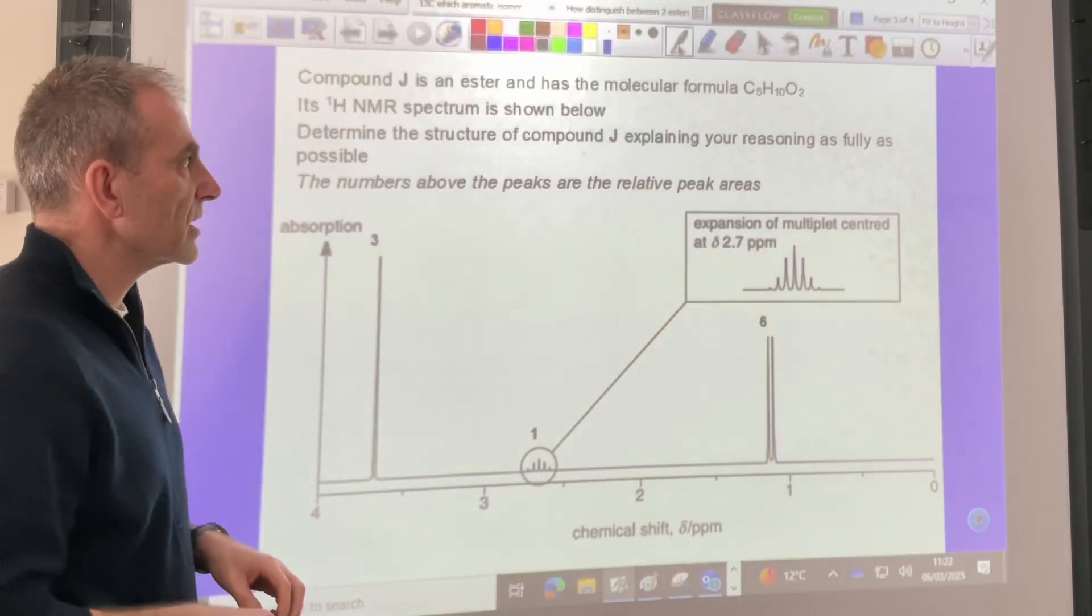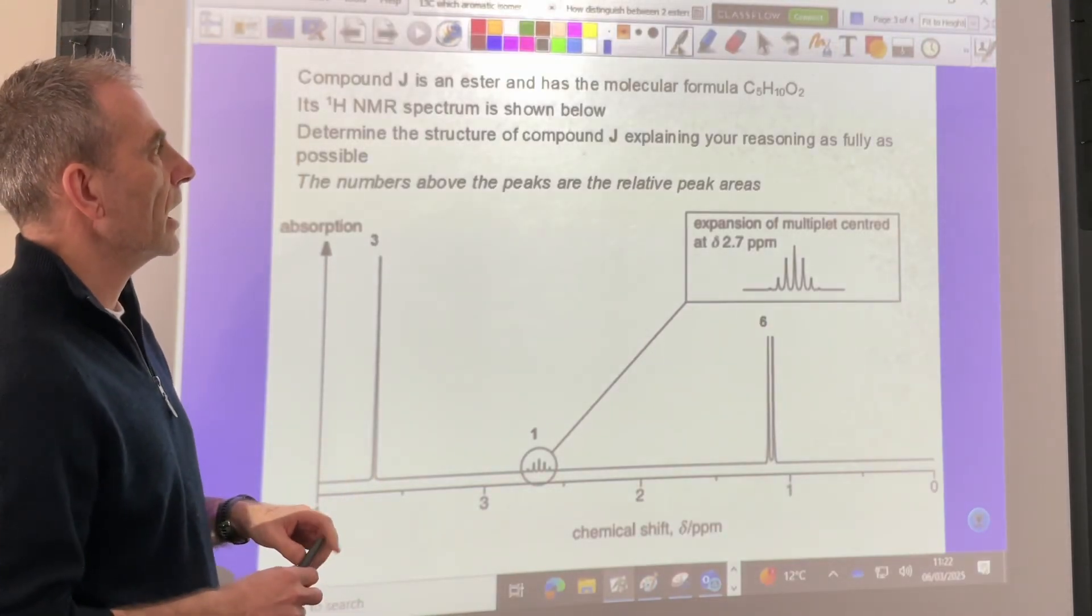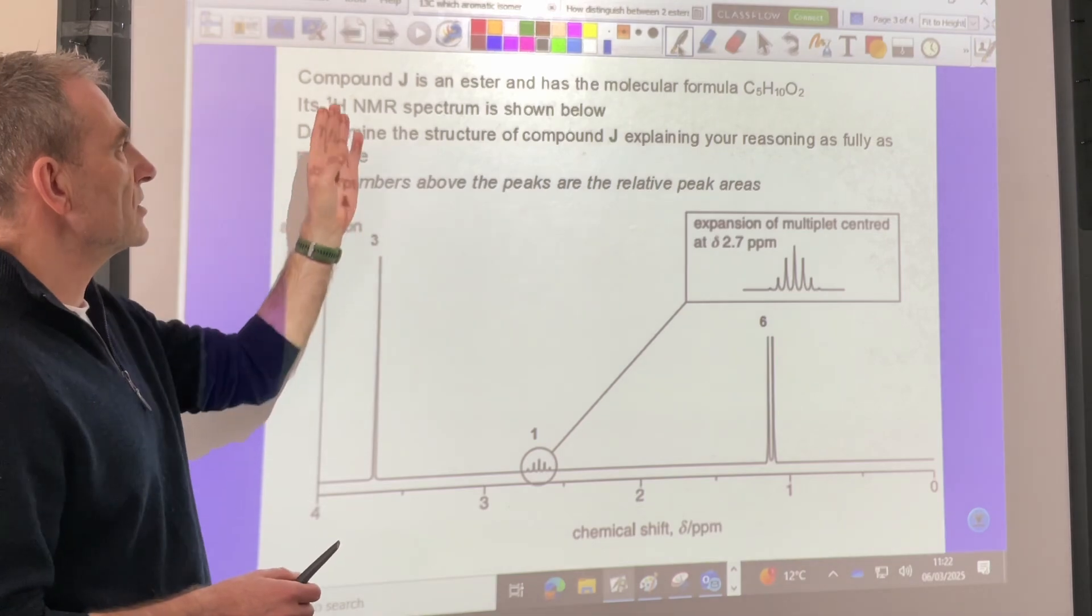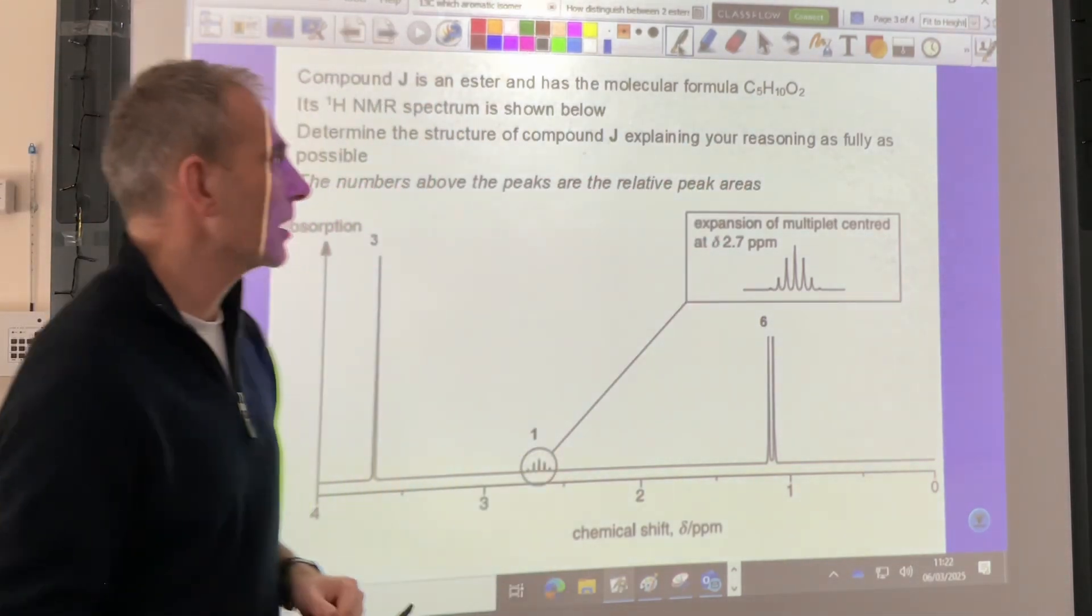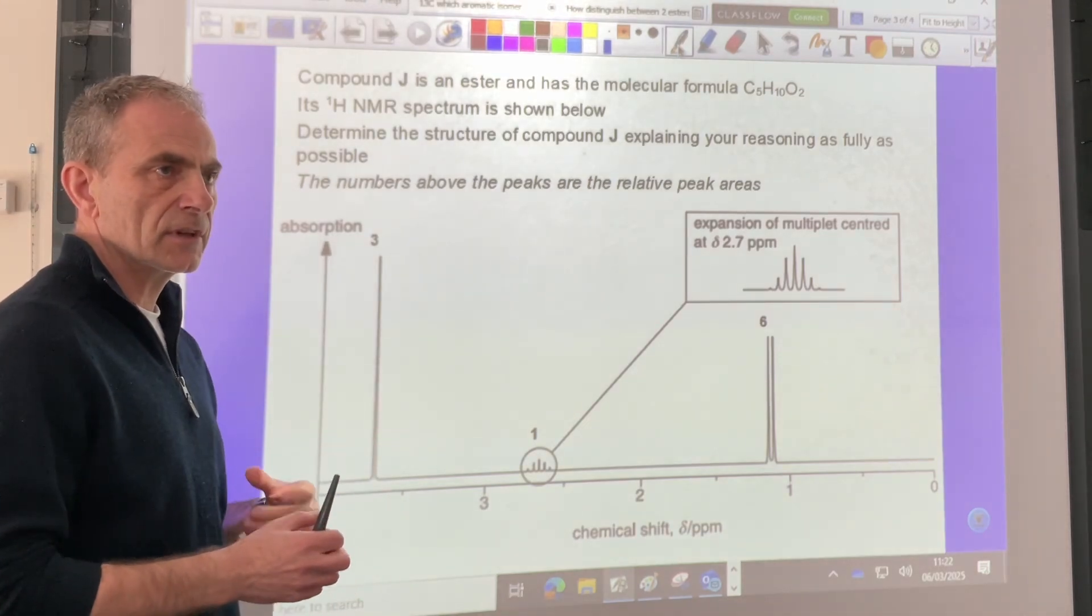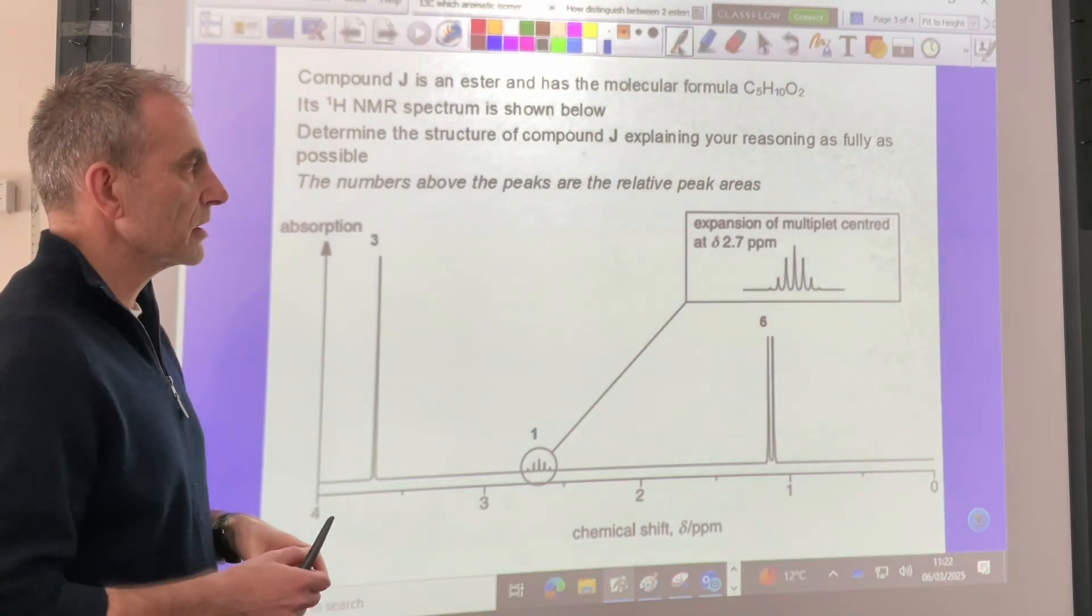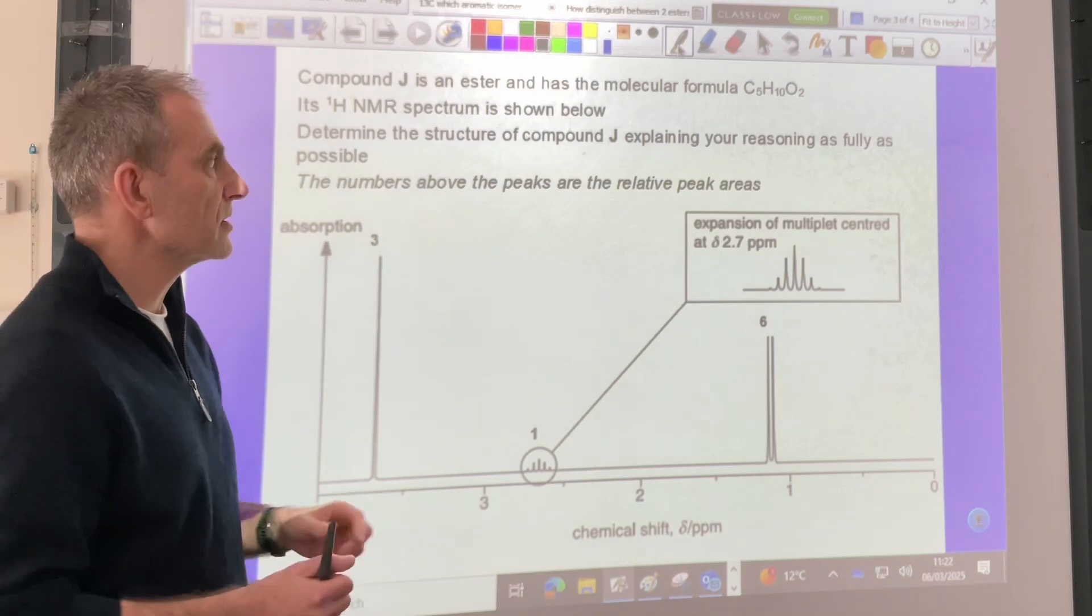We've got a typical past paper question here on proton NMR, so we've got to determine the structure of ester J. There's its molecular formula, but what I wanted to do was just give you some clues, some tips and tricks that you can do to maximize your marks.